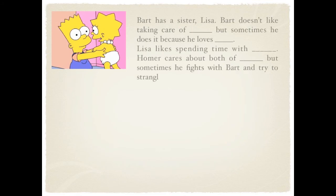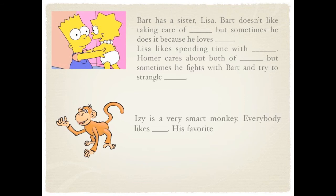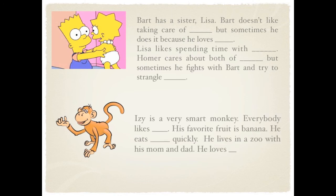We have the Bart Simpson example. Bart doesn't like taking care of her — Lola. He does it because he loves her — Lola. Lola likes to spend time with him — Bart. Homer cares about both of them — Bart and Lisa. And he tries to strangle him — Bart. For 'easy', we have it — he eats it, banana. And he loves them — her parents.